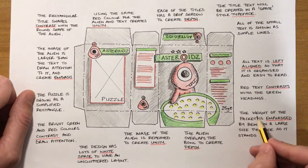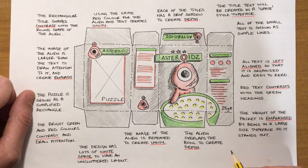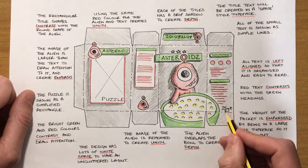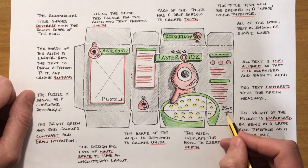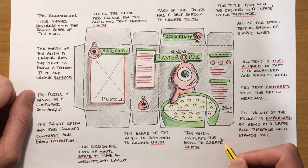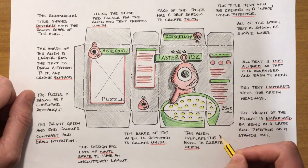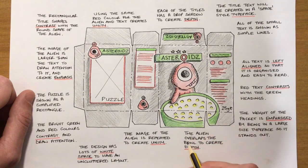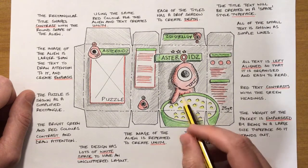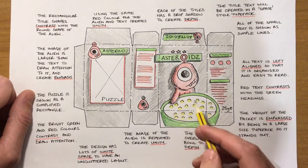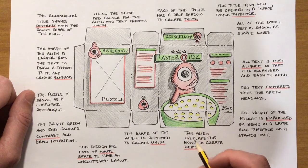Moving on to the little weight graphic at the bottom corner, I've noted that the weight of the packet is emphasized because it's in a large-size typeface so that it stands out — because that's one of the key bits of information the user would want to see: how much cereal is actually in that box.